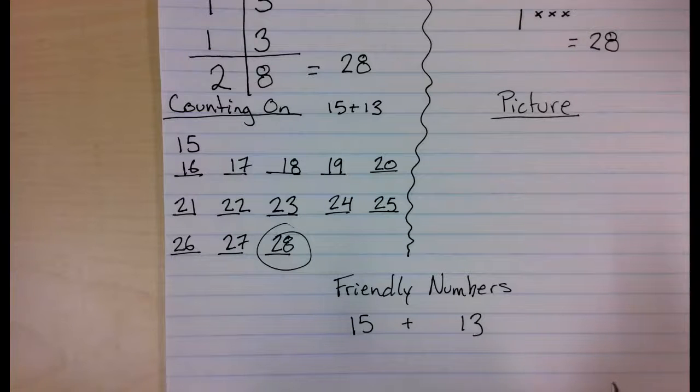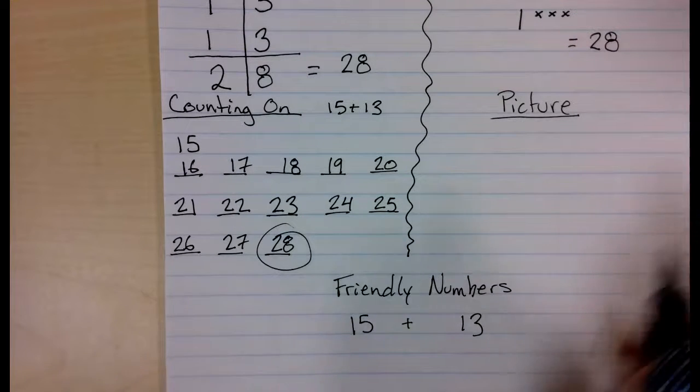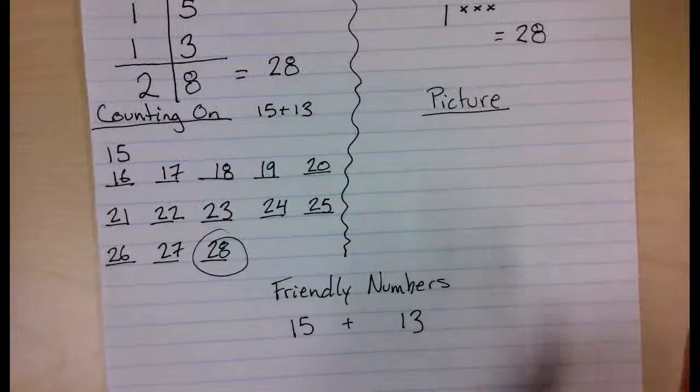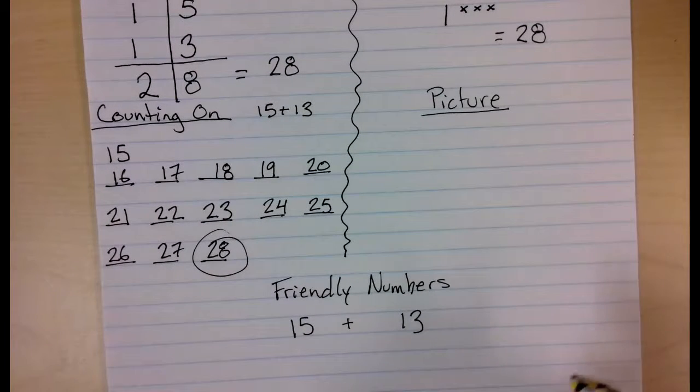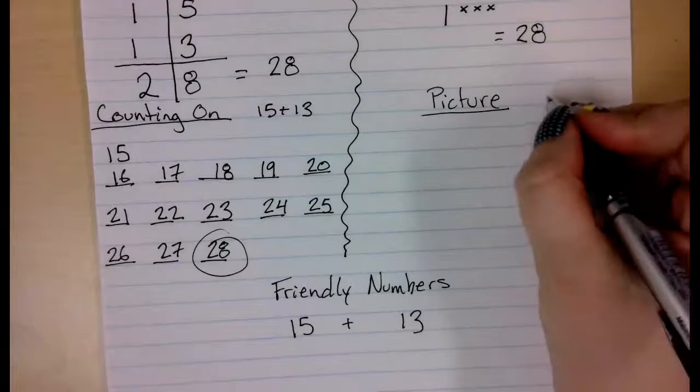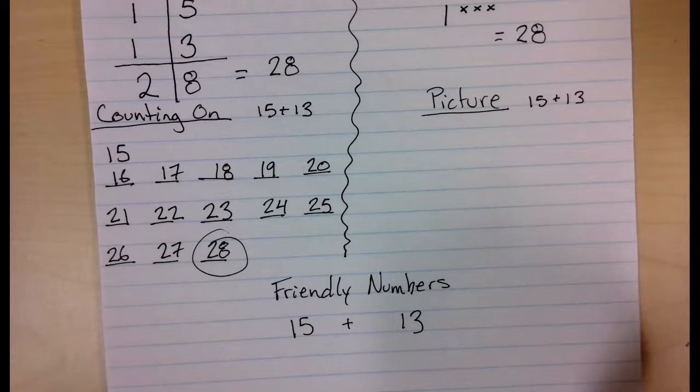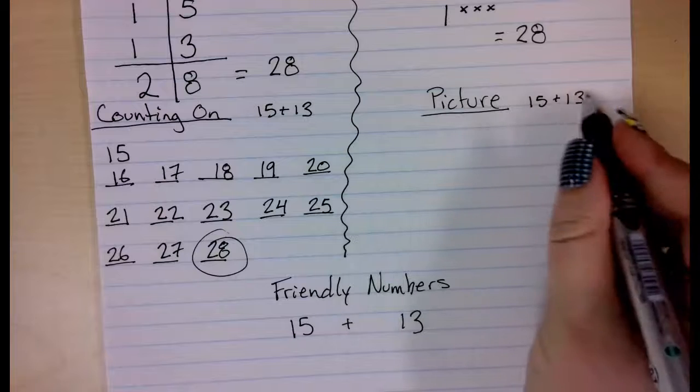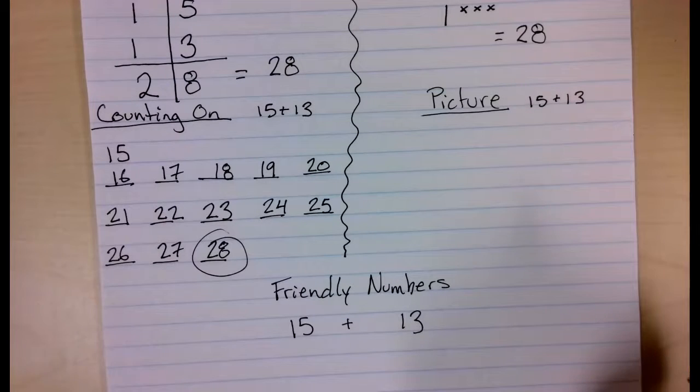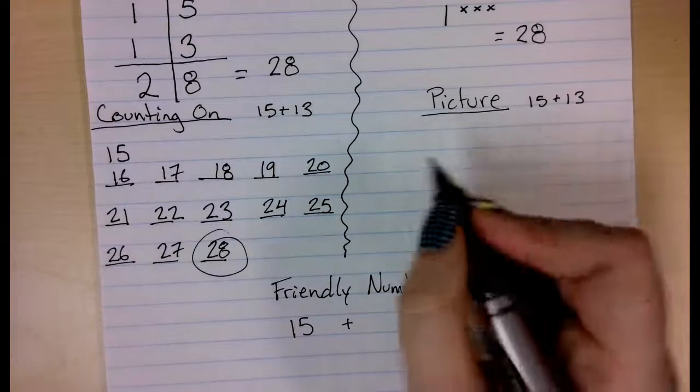Alright, the next one we are going to do is the picture. Now, this is one I want you to start working away from. It works well for something like this with 15 plus 13, but I want you to imagine drawing a picture for 57 plus 21. That would be a lot of tick marks. So I can draw this one because my numbers are little, but if you have a huge number, you would not want to use this picture strategy.